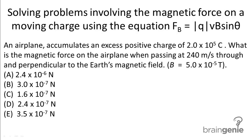Solving problems involving the magnetic force on a moving charge using the following equation. An airplane accumulates an excess positive charge of 2.0 times 10 to the 5th Coulombs. What is the magnetic force on the airplane when passing at 240 meters per second through and perpendicular to the Earth's magnetic field?